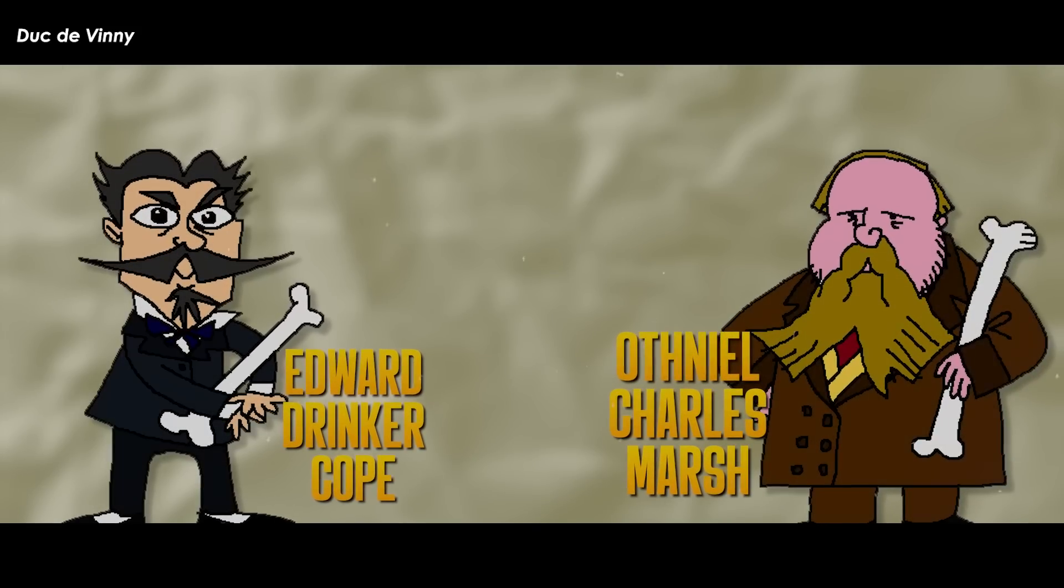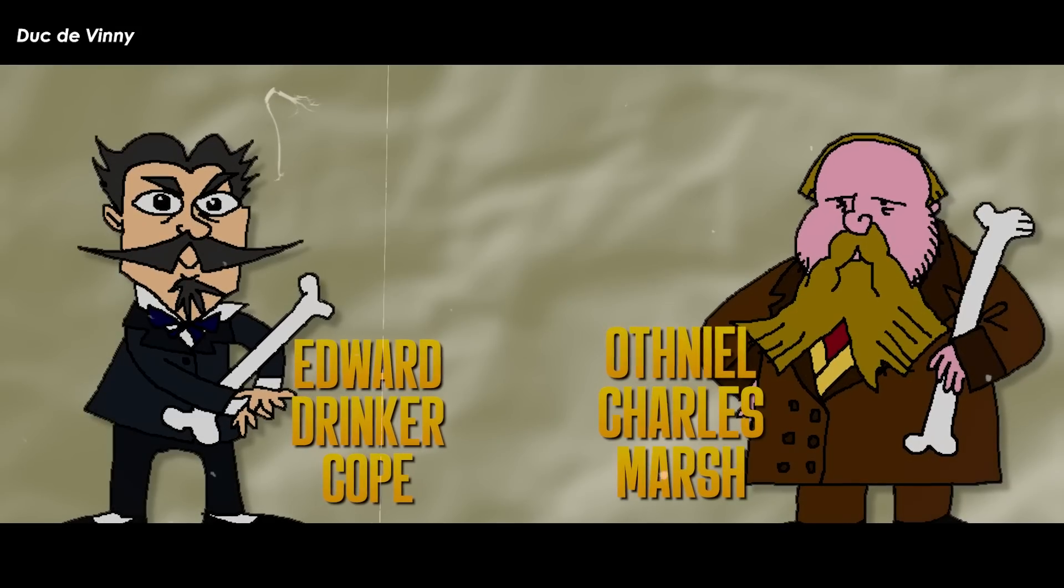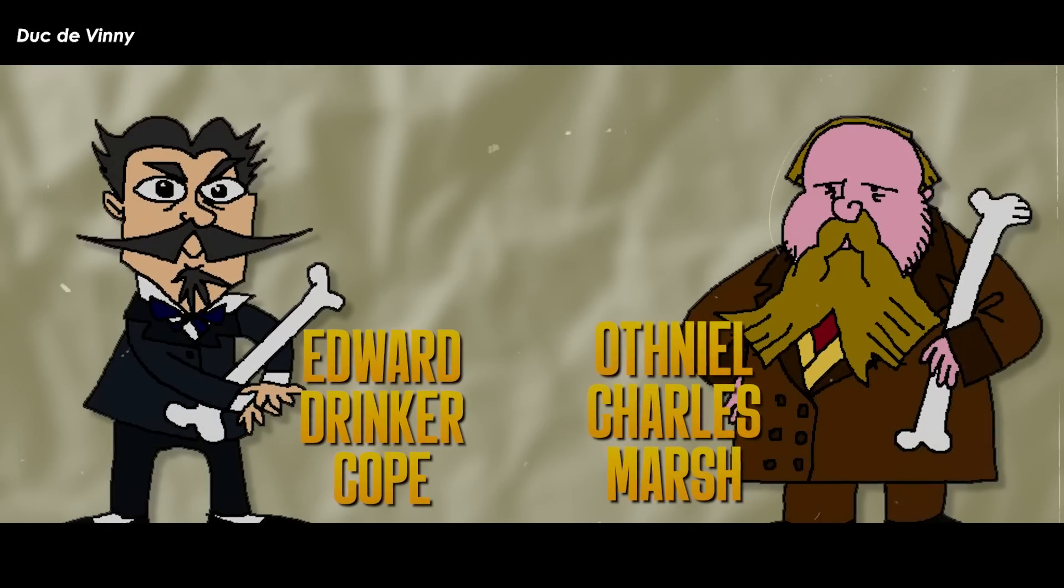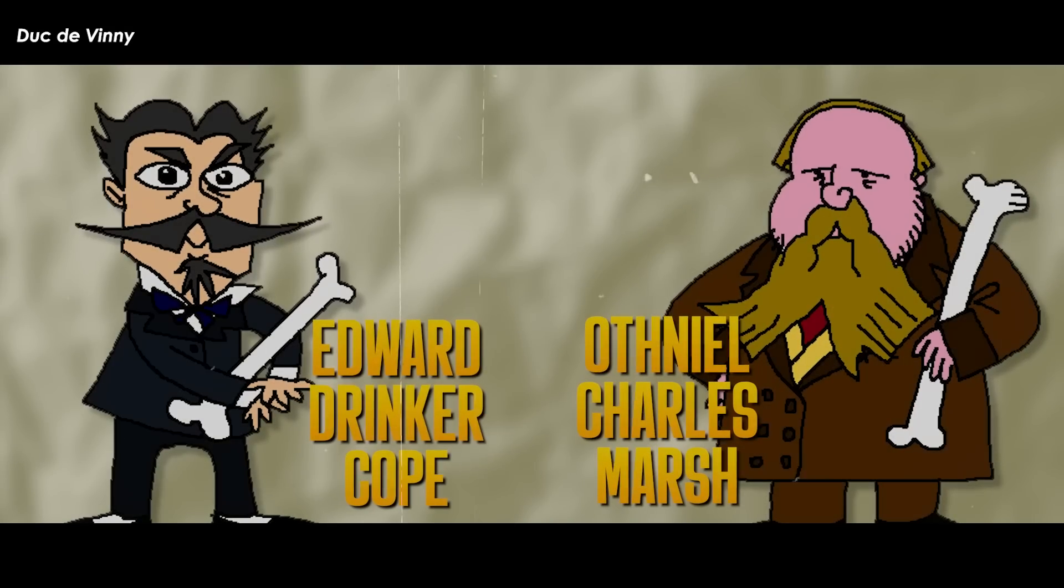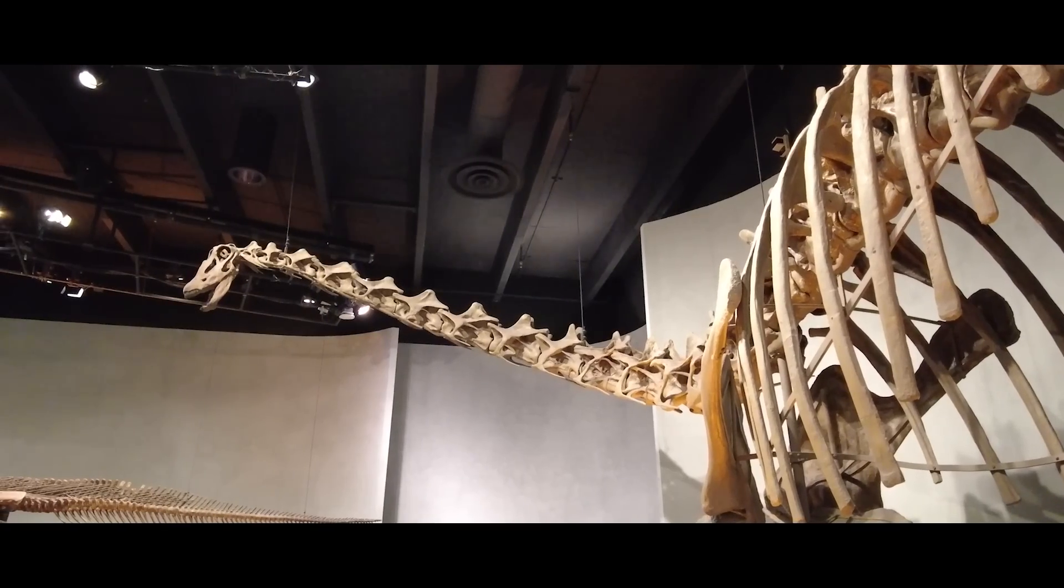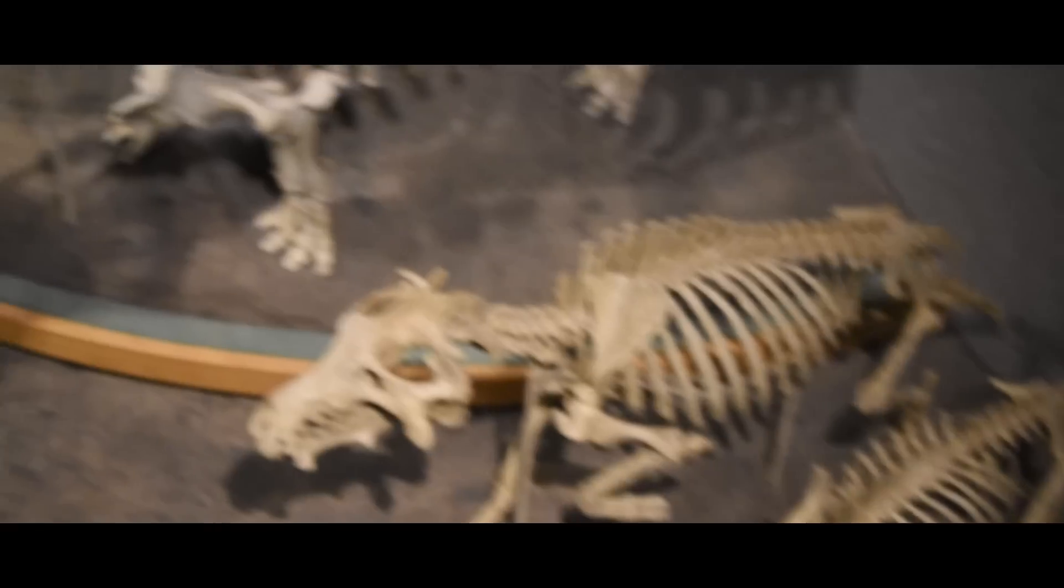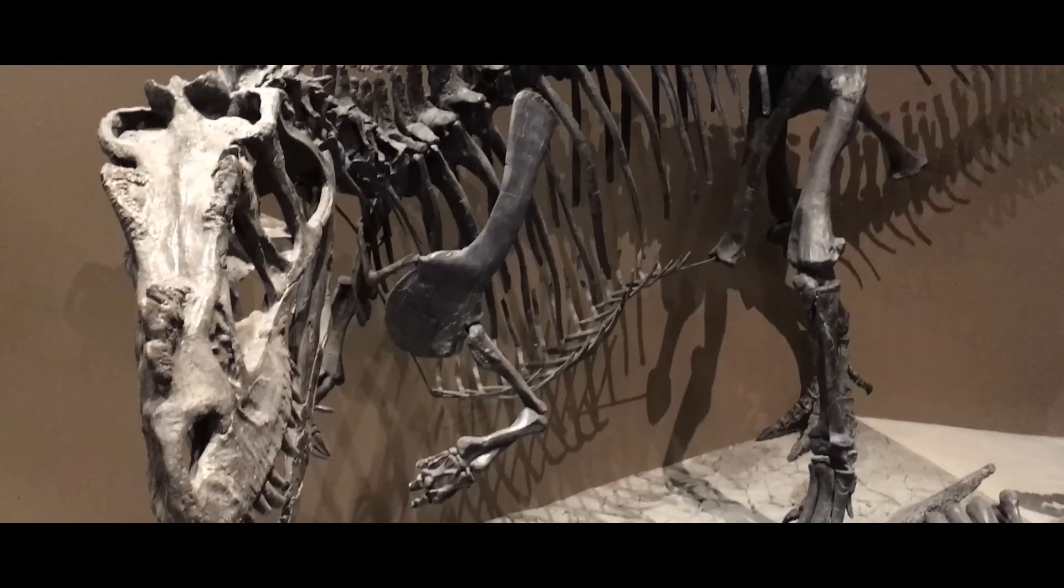Othniel Charles Marsh and Edward Drinker Cope were two American paleontologists active during the late 1800s who did a little whimsical friends-to-enemies arc, resulting in the discovery of the majority of dinosaurs, extinct mammals, and marine reptiles we know of today.